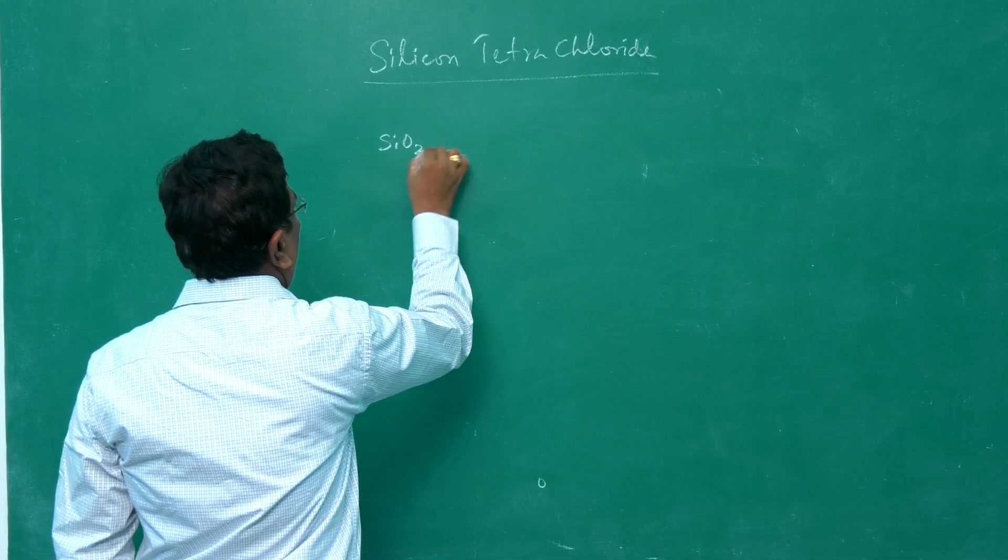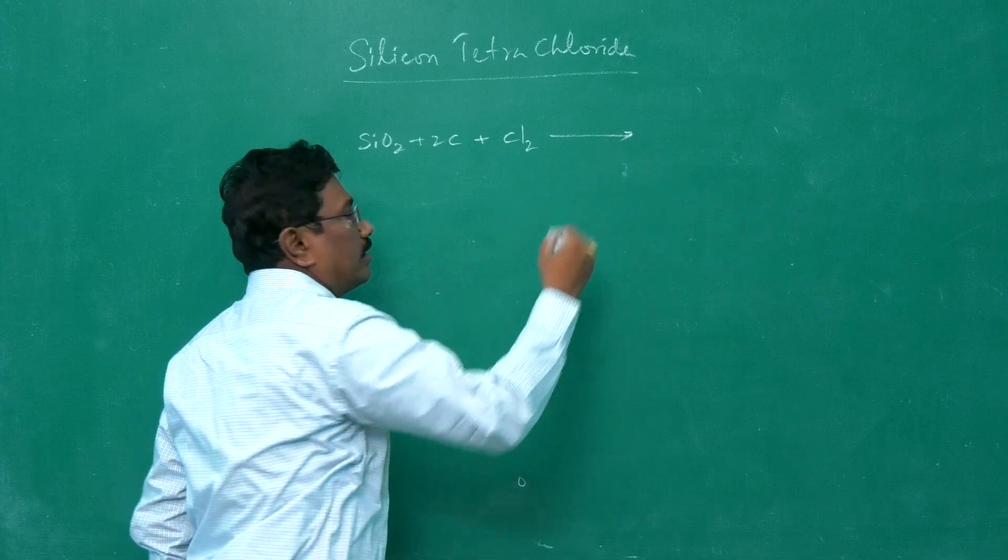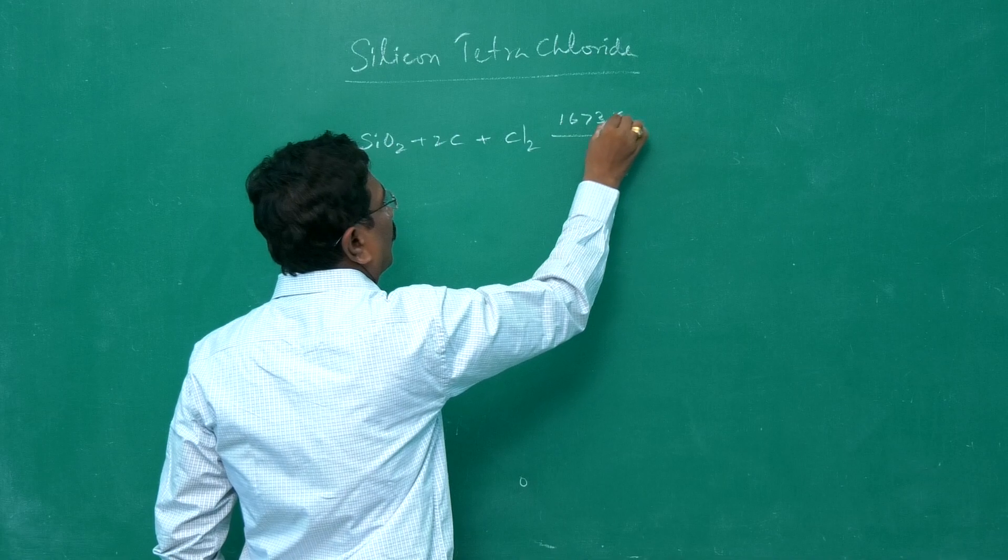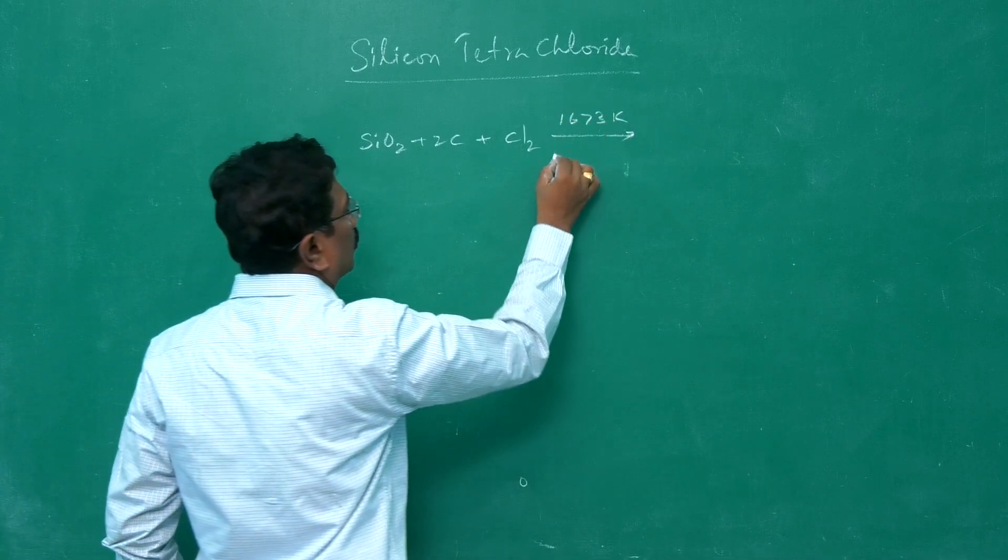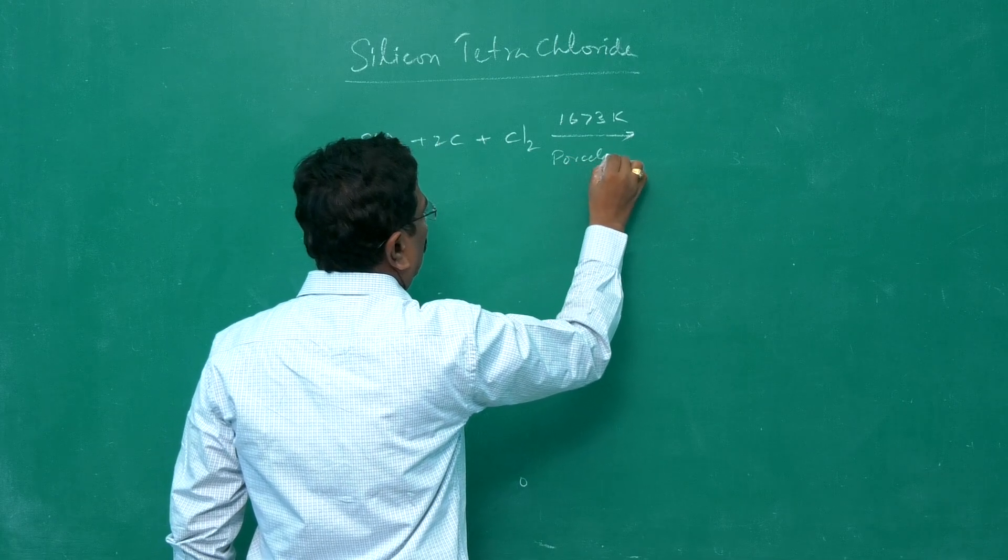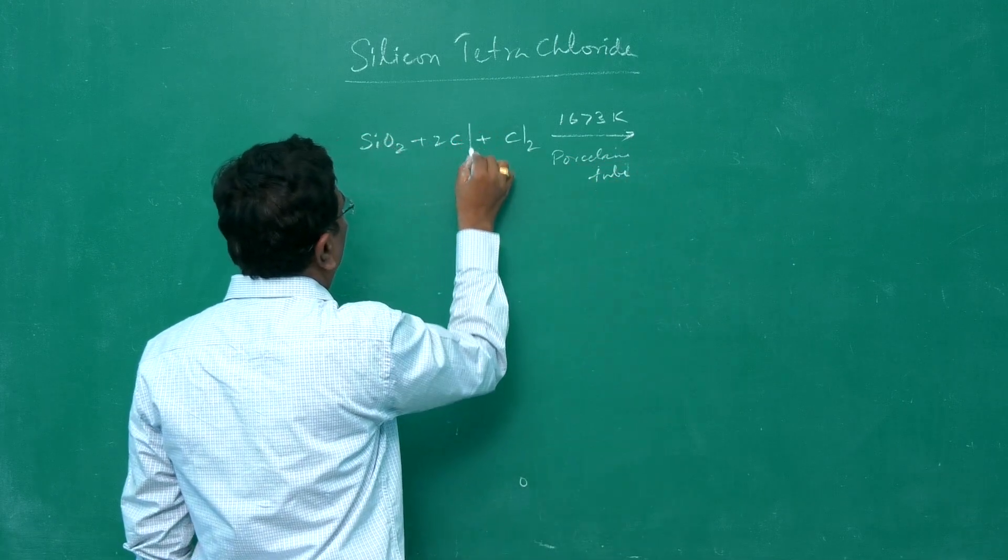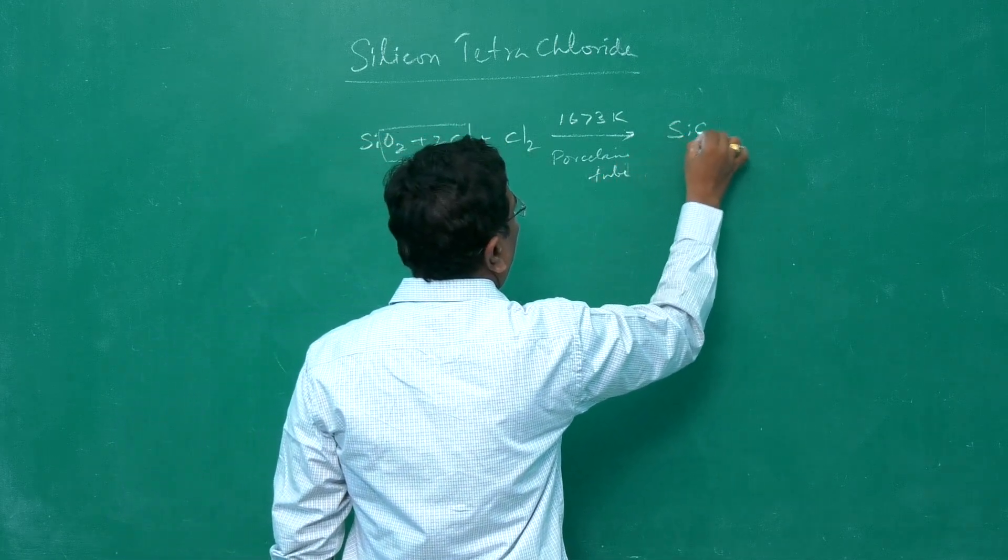We pass chlorine gas at a temperature of 1673 Kelvin in a porcelain tube. What is happening? The carbon takes up oxygen to become carbon monoxide, and we get silicon tetrachloride.